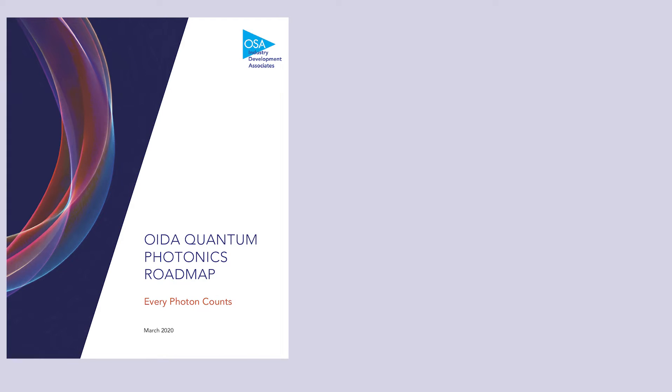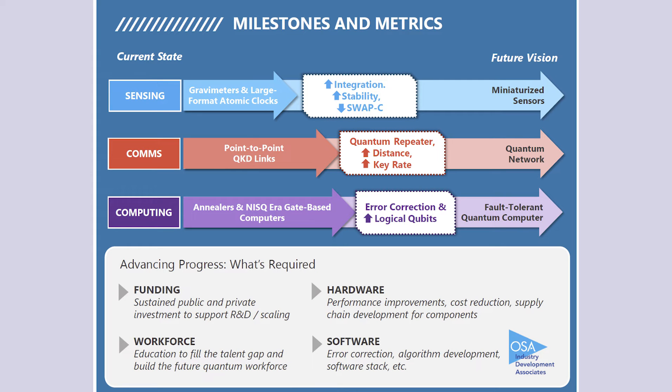So finally, I wanted to call attention to a recent quantum road mapping effort, which is sponsored by the Optical Society of America Industry Development Associates. So this is a photonic centric document that is really looking at how photonics can contribute to the second quantum revolution. So there are lots of really interesting graphics like this one...